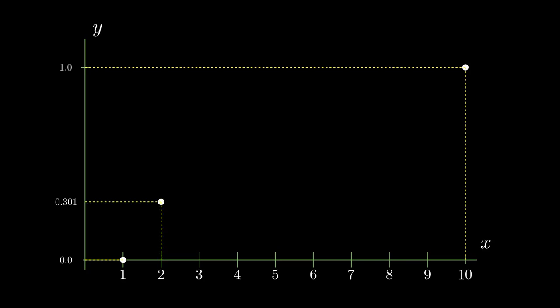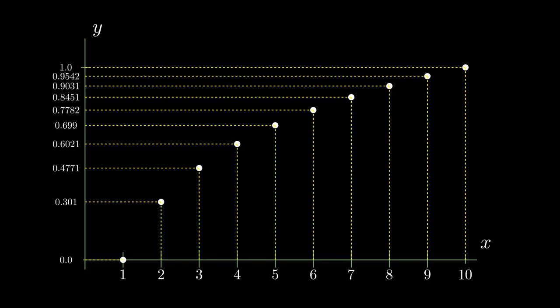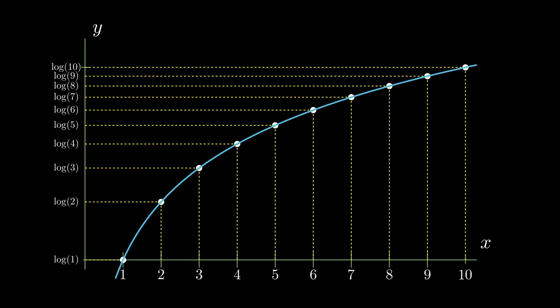1 corresponds to 0, 10 by definition corresponds to 1, 2 corresponds to 0.301 with few decimal places, and the other intermediate values. We can also indicate the complete function that is defined for all intermediate points. Instead of writing the actual numbers, we can put logarithm of, leaving the indication in parentheses.